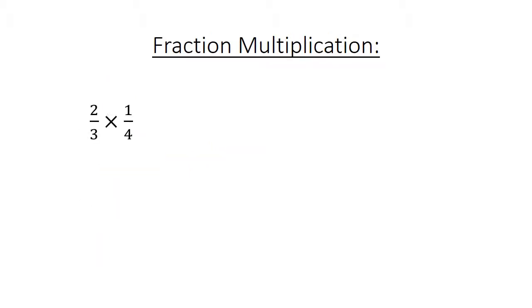Fraction multiplication. Two over three times one over four equals two over twelve, which equals one over six.